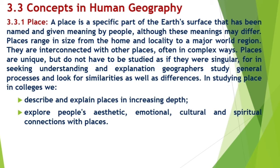In studying place, we describe and explain places in increasing depth. Their characteristics include population, climate, economy, landforms, built environment, soils and vegetation, communities, water, resources, culture, minerals, landscape, and recreational and scenic quality. Some characteristics are tangible, such as rivers and buildings, while others are less so, such as wilderness and socio-economic status.